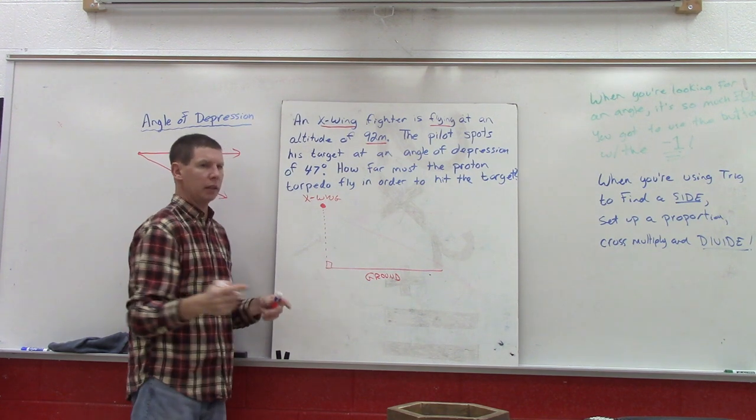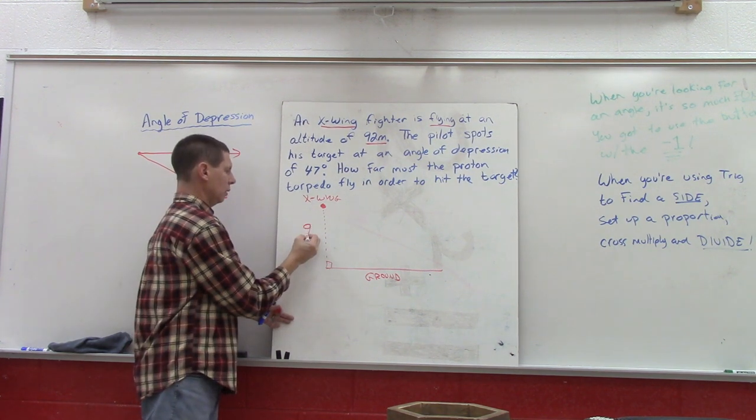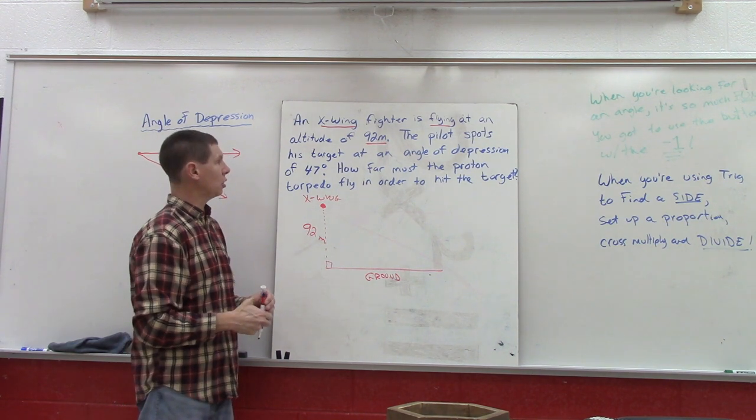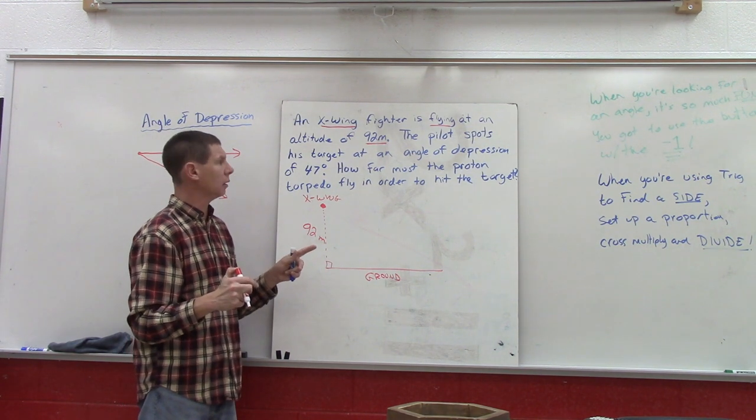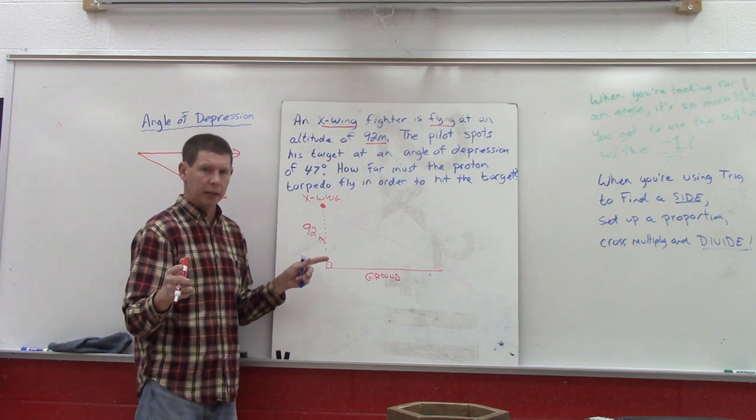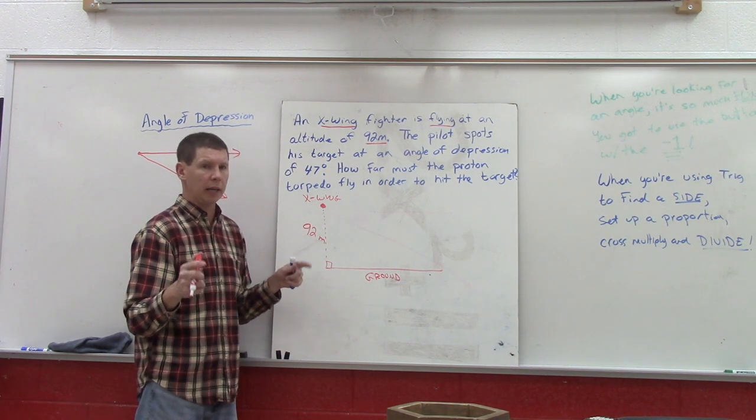So here's what we got so far. Now we move to the sentence: the pilot spots his target at an angle of depression of 47 degrees. So we need to draw this in accurately.